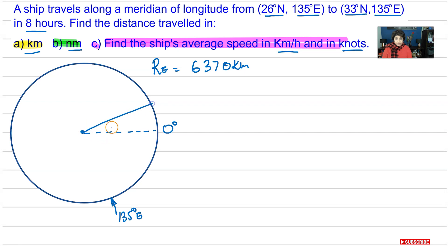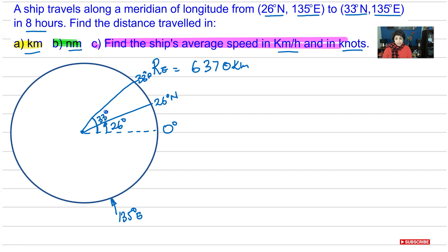Let's say this is our equator, which is 0 degrees. We start our journey at 26 degrees north — we count our degrees from the equator. That is where we have our first latitude. Then we have our second latitude at 33 degrees north, which is the end of our journey. So the angle from 0 to 26 degrees is 26 degrees, and the whole angle from 0 to 33 degrees north is 33 degrees. That's the centre of our Earth and this is the radius of the Earth.